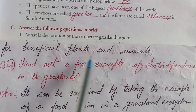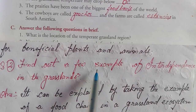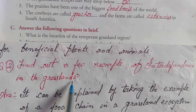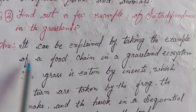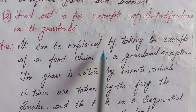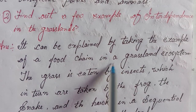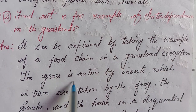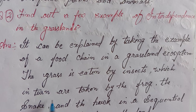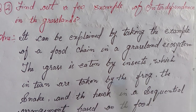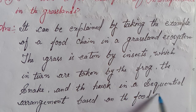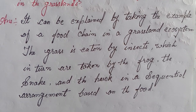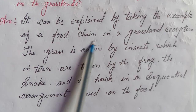Find out a few examples of interdependence in the grasslands. Answer: It can be explained by taking the example of a food chain in the grassland ecosystem. The grass is eaten by insects, which in turn are eaten by frogs, then snakes, and then the hawk — in a sequential arrangement based on the food chain.